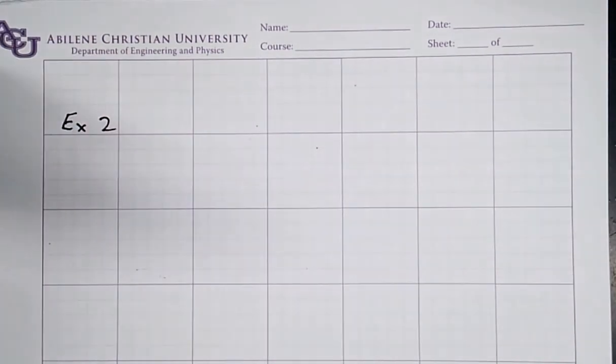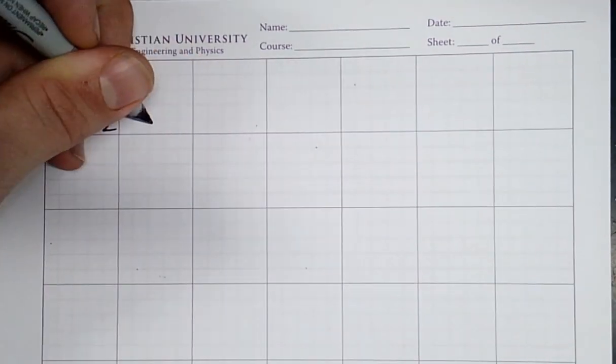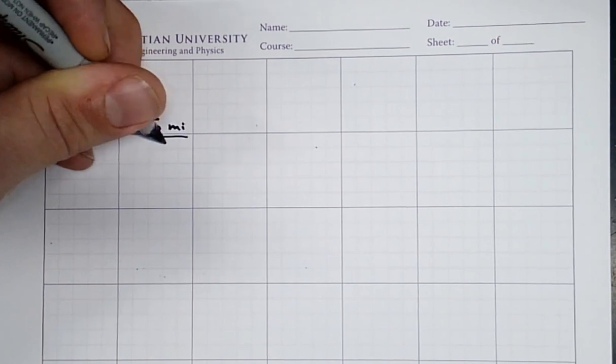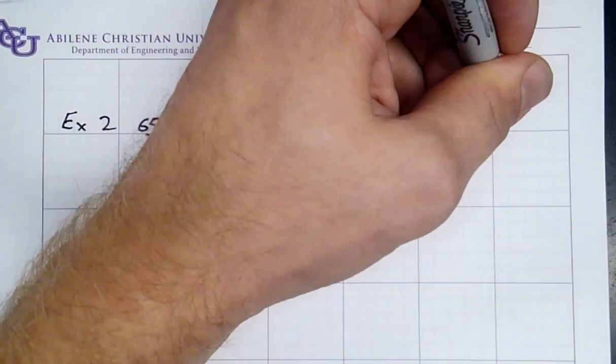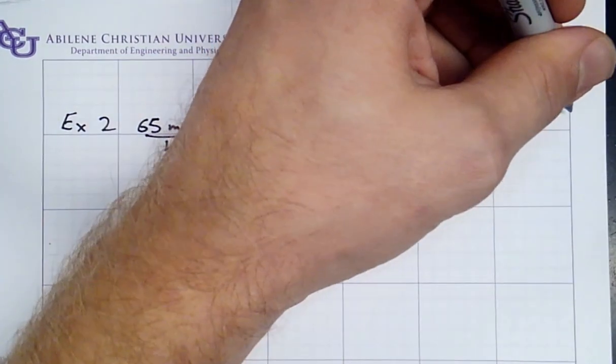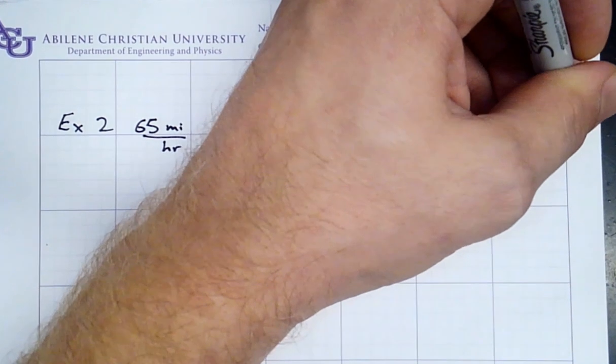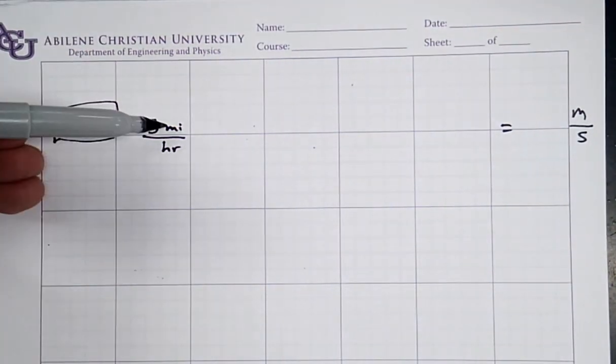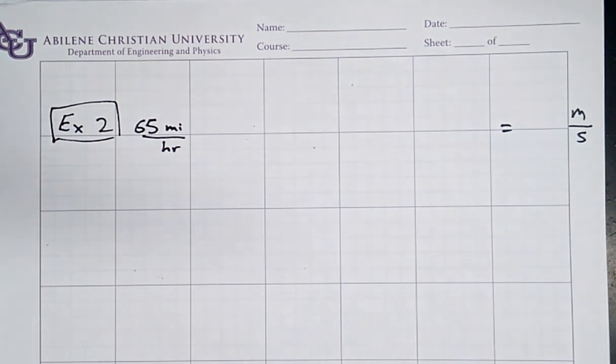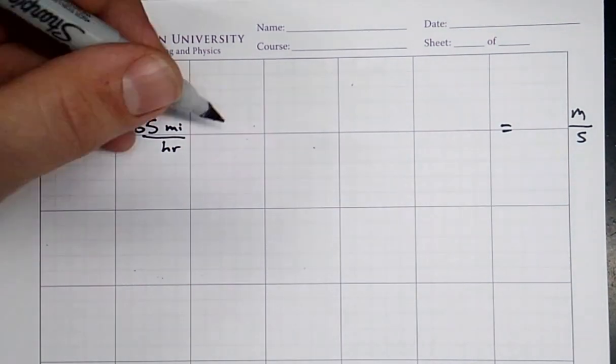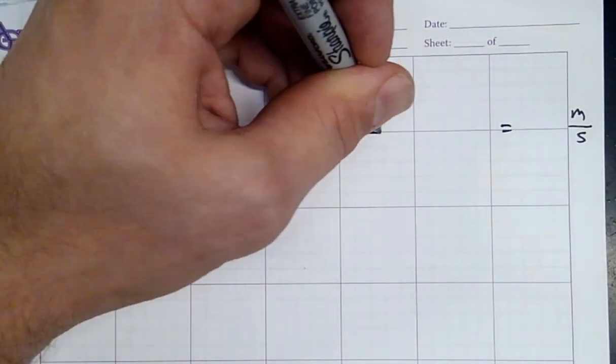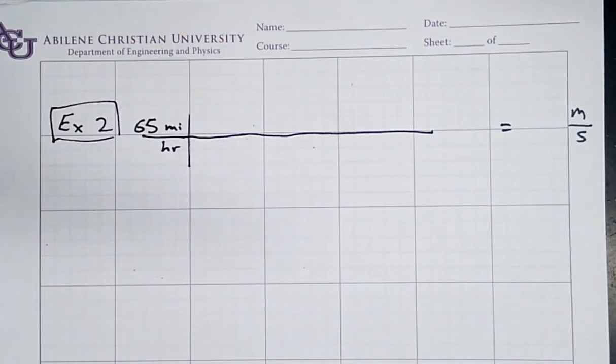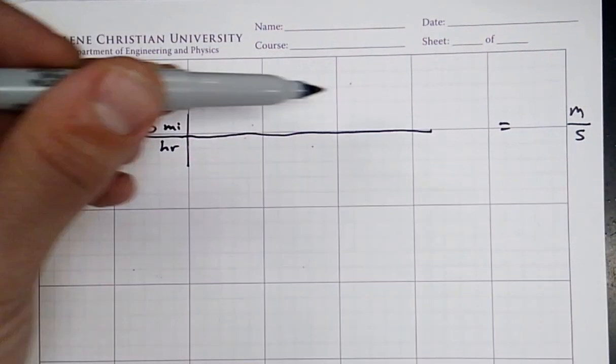Let's keep this party going with example number two. I want to convert 65 miles per hour into something like SI units. So, I want to end up with a number here in meters per second. When I do this work, I'm going to be careful to write my miles as MI and my meters as M so I don't get confused. And like before, we're going to do this by multiplying and dividing by things that are just equal to 1.